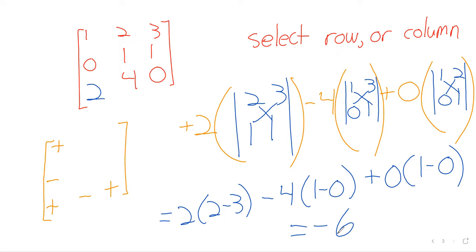Don't get confused by the sign chart. The sign chart is telling us whether to add or subtract. For example, if we had a negative 2 there, the sign chart says positive, negative, positive — so plus a negative 2 is just negative 2. Be a little careful with that sign chart when you have negative entries.